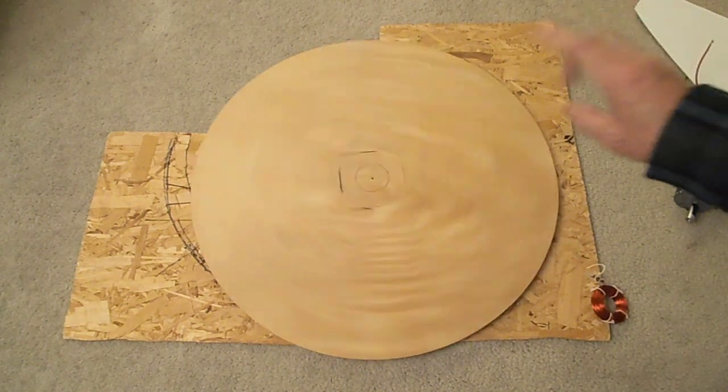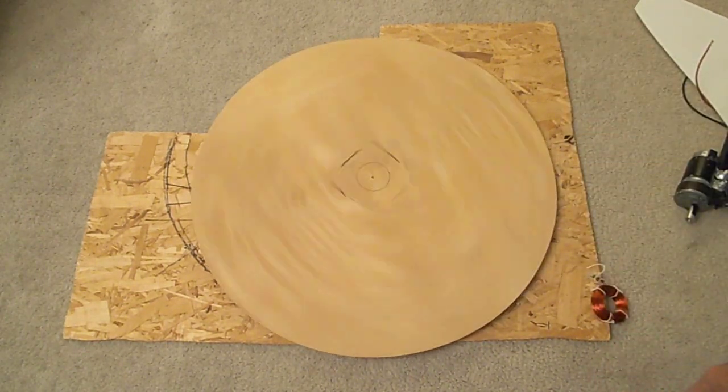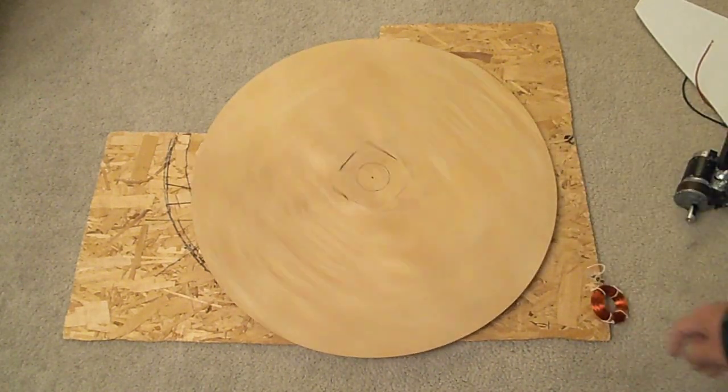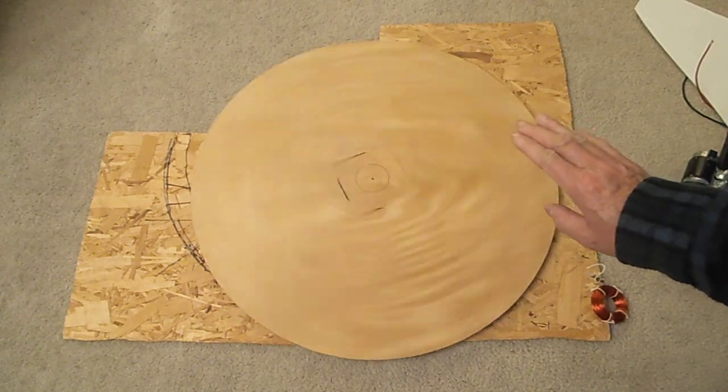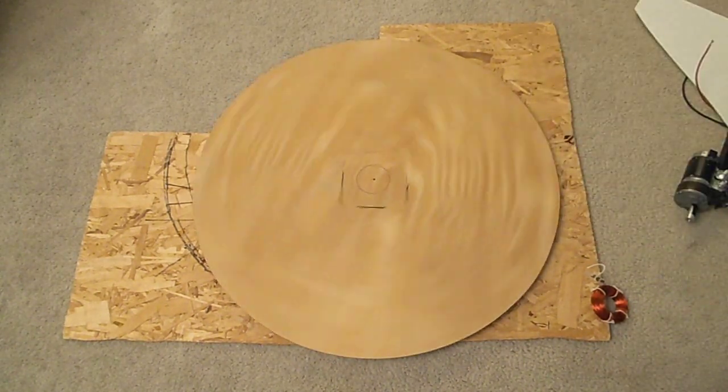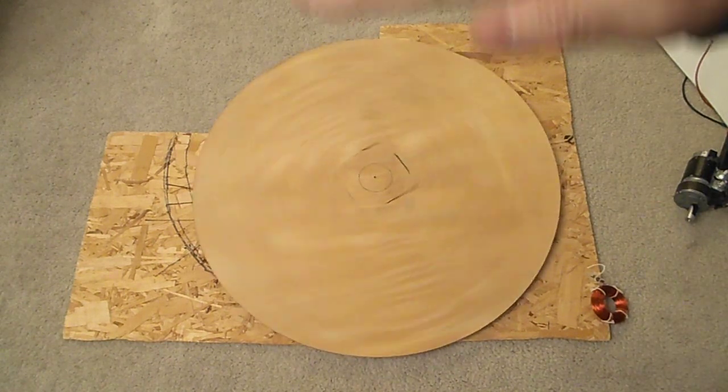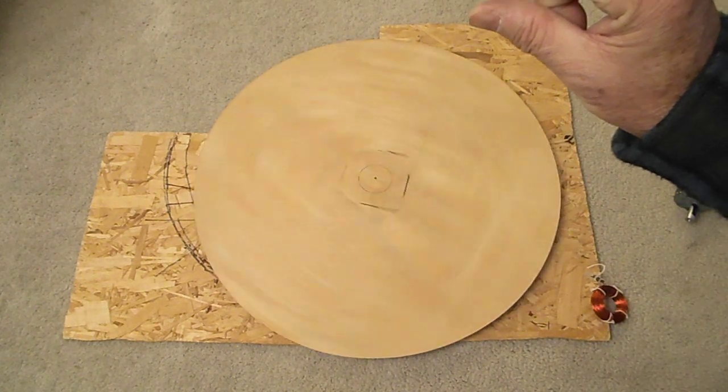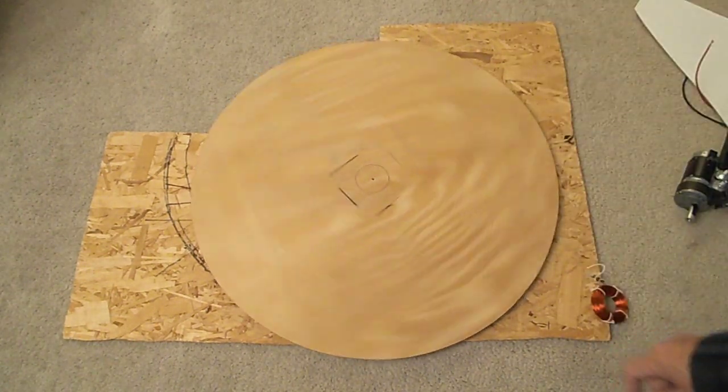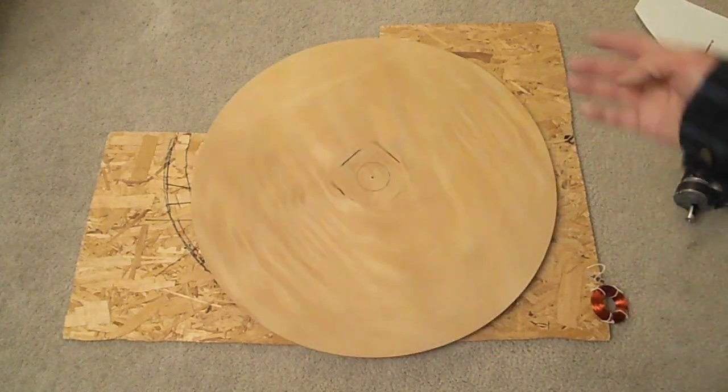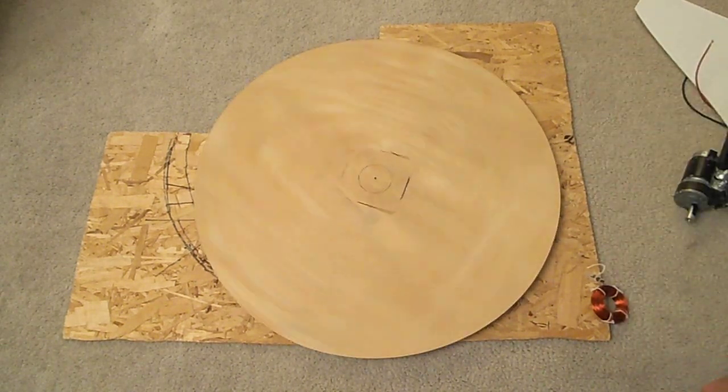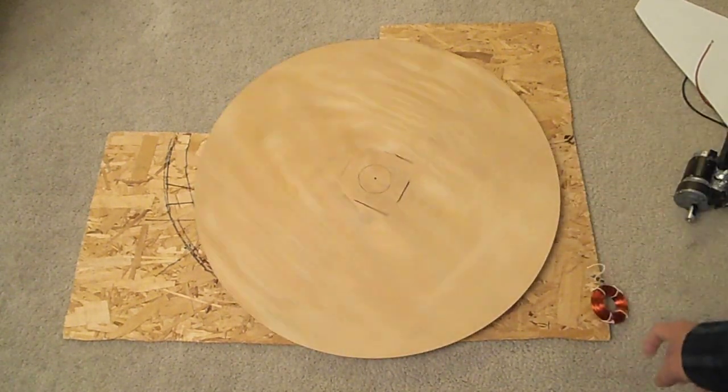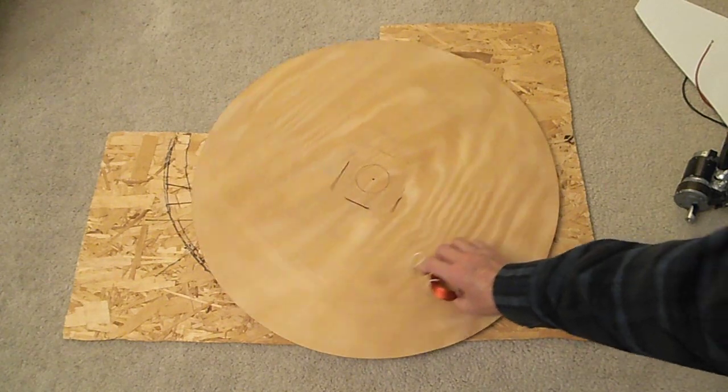As you can see it turns very easily. There are many problems of course. One of the biggest problems is the wood is not actually very flat and you would have a bit of fluctuation in the gap between the coil and magnets. But hey, that was what came to my mind. If I don't use this as a turntable for my solar oven, I can use it as a vault.